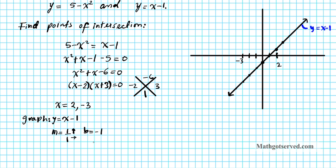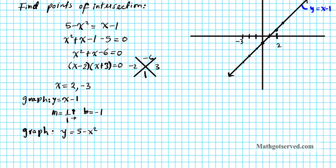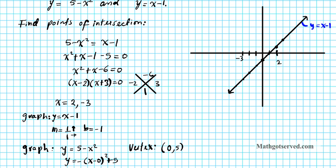Next we want to graph the parabola: y equals 5 minus x squared. Where is the vertex? We can write this in vertex form as y equals negative (x minus 0) squared plus 5, so the vertex is at (0, 5). The negative coefficient means the parabola opens downward, and the plus 5 means it is shifted 5 units upward with no left or right shift.